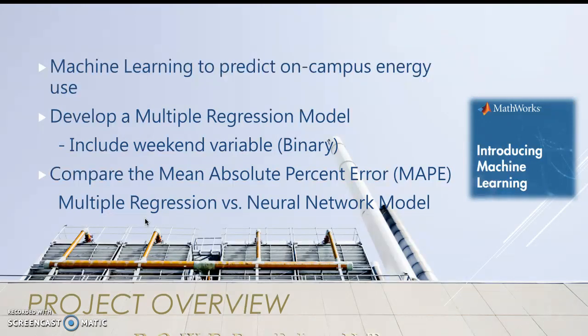To compare these models, we decided to use mean absolute percent error and solve for those, and then we were able to compare which one was better, whether it be the multiple regression model or the artificial neural network.